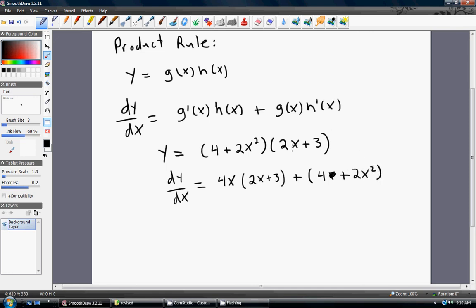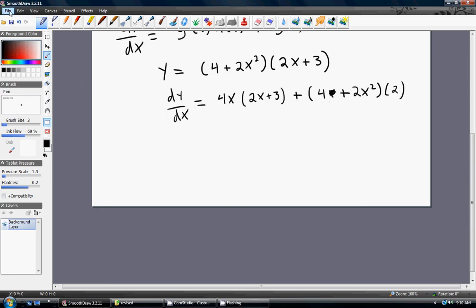Multiply by the derivative of h of x, the derivative of what's in parentheses here, 2x plus 3 is just 2. And we could simplify that, but that is the basics of taking the product rule.